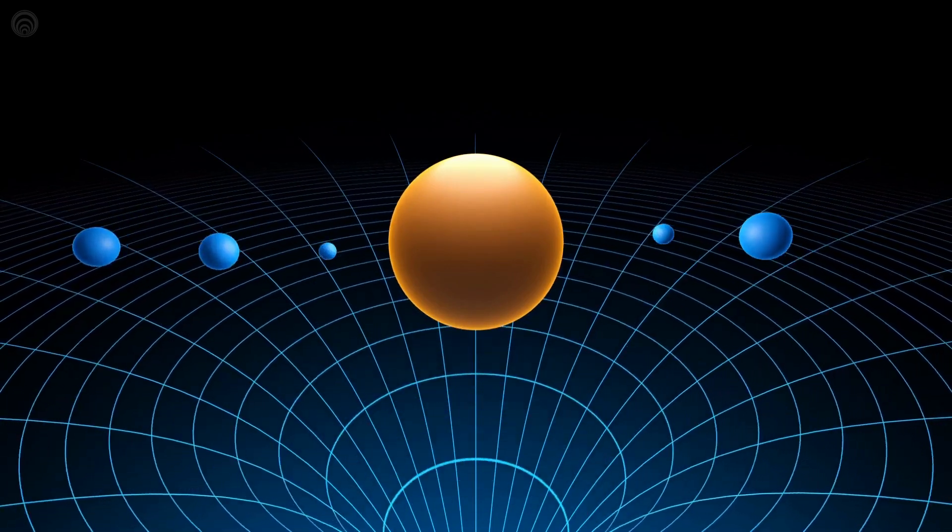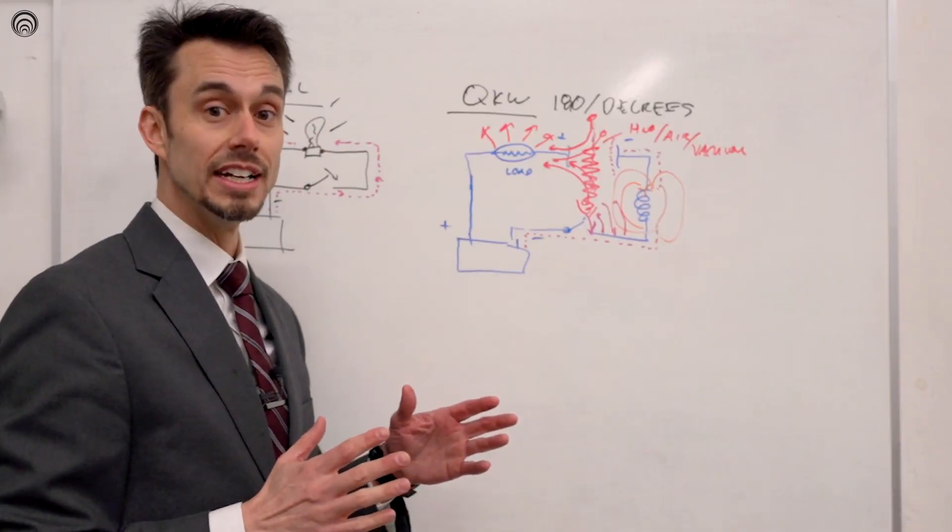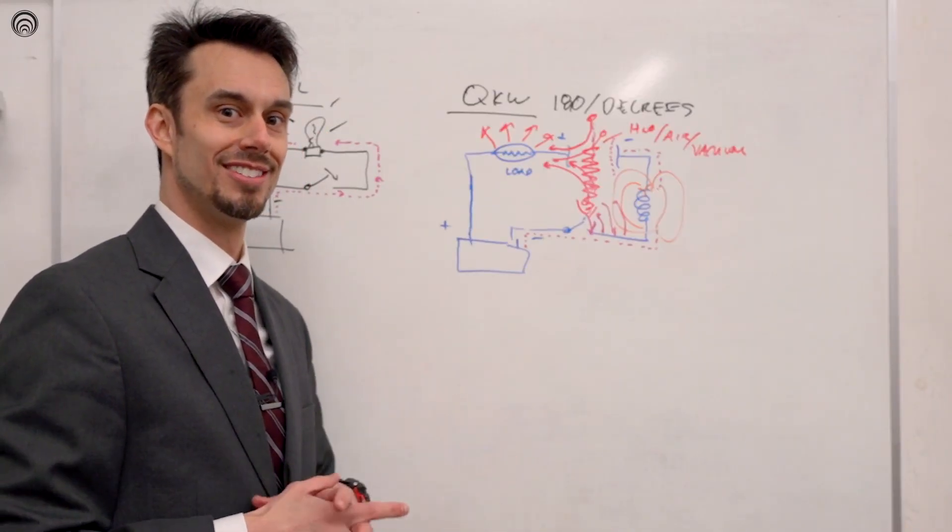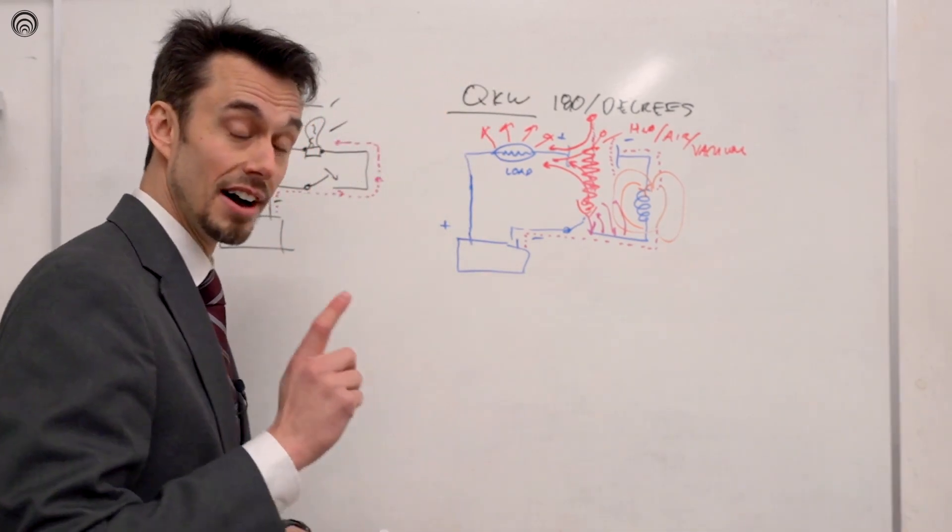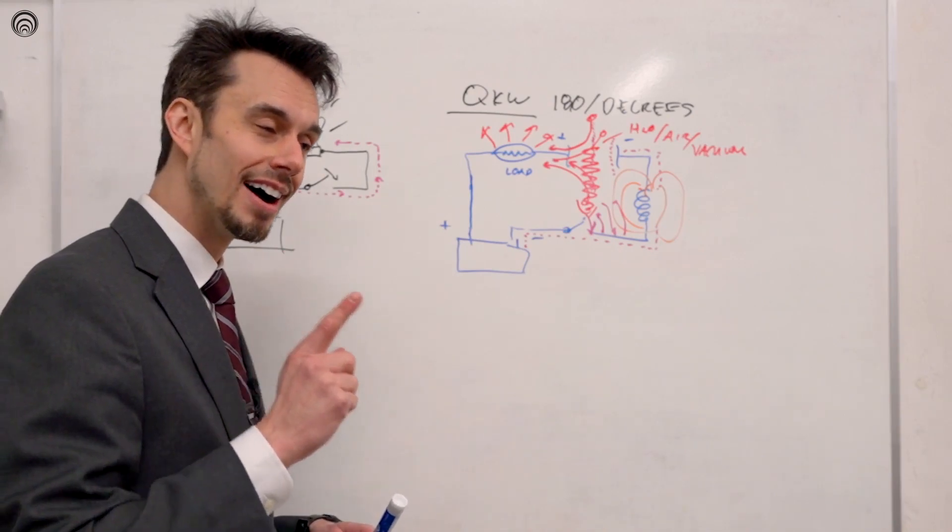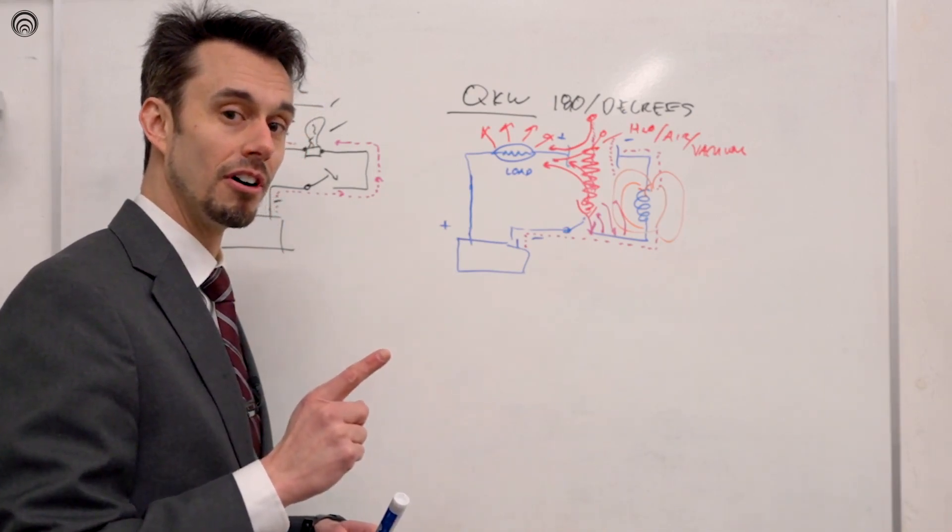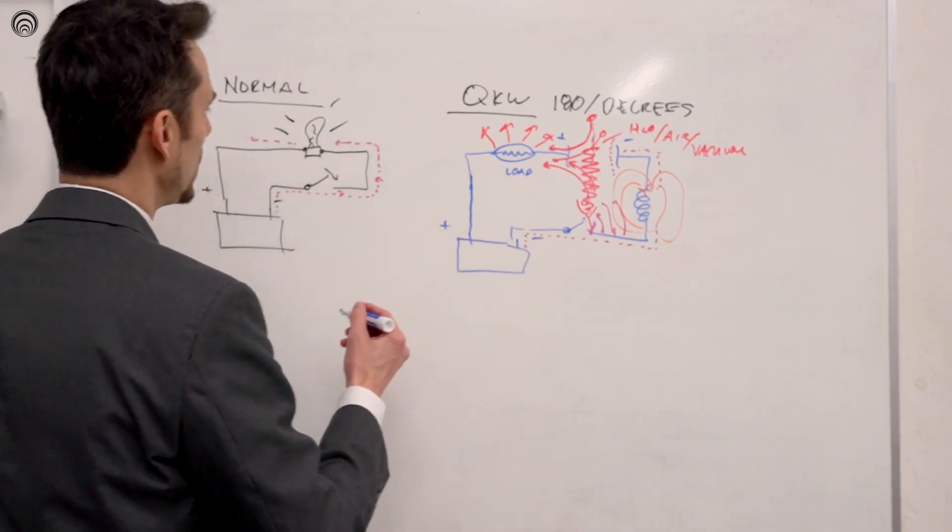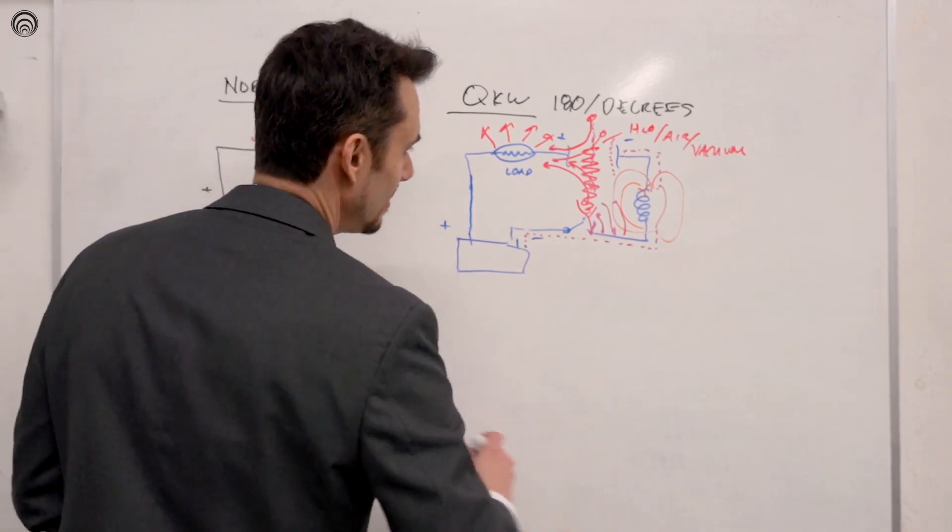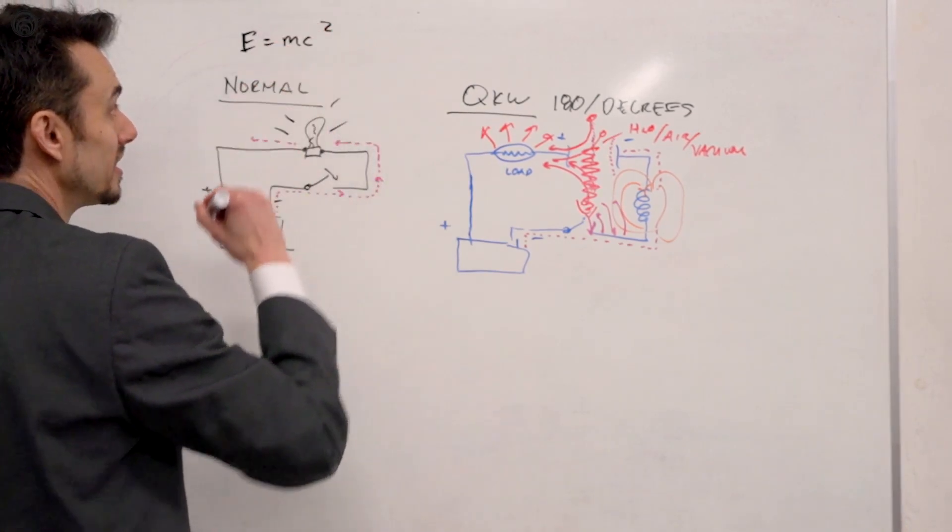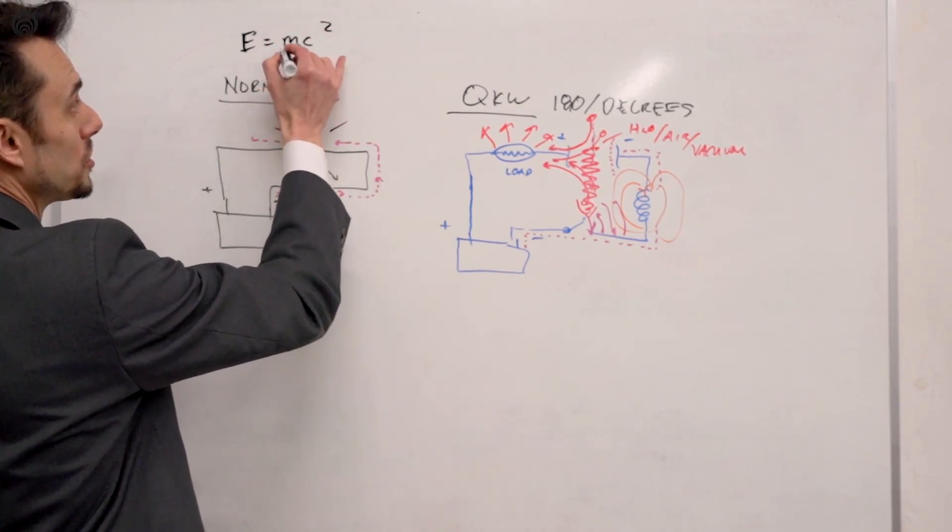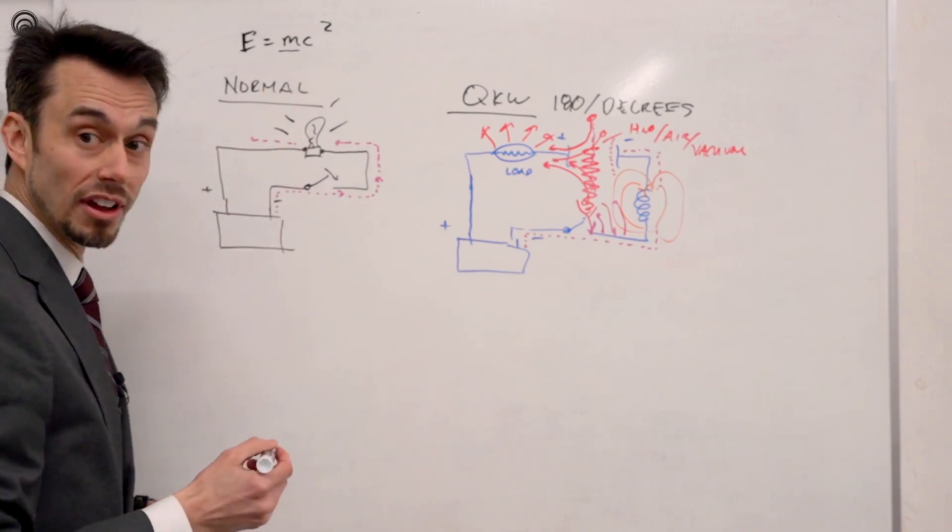Gravity is a wave, gravity has a charge. And the reason I know this is because Einstein's equation is kind of right and kind of wrong. Einstein's equation is E equals mc squared. The energy equals the mass times the square of light.